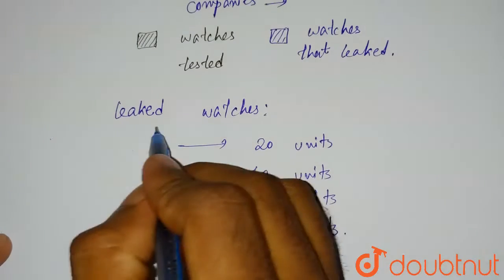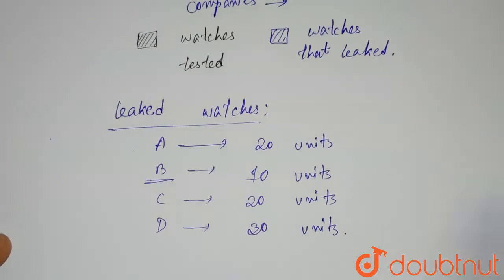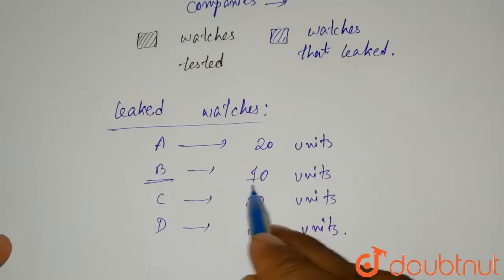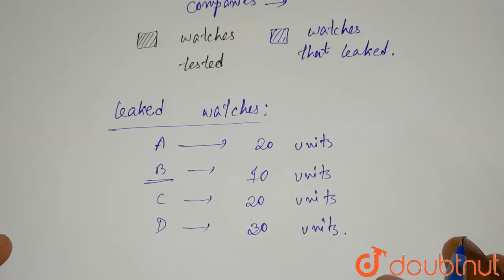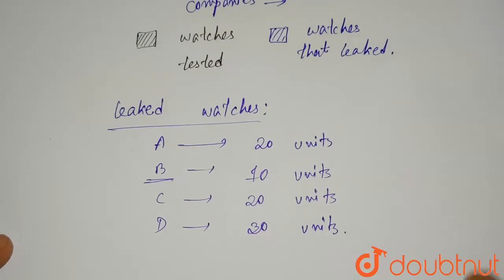If we look at the amount of leaked watches, here we can see that B company has the least amount of leaked watches as it has only 10 units of leaked watches. That means the company B is making the best quality watches.